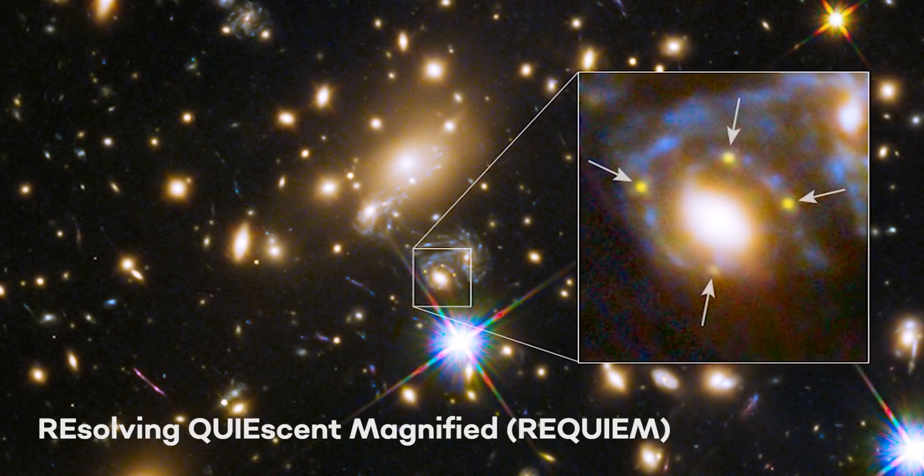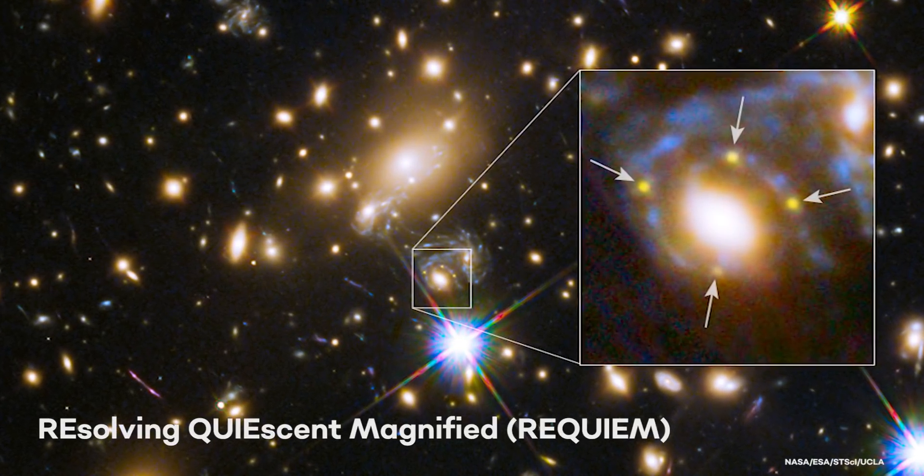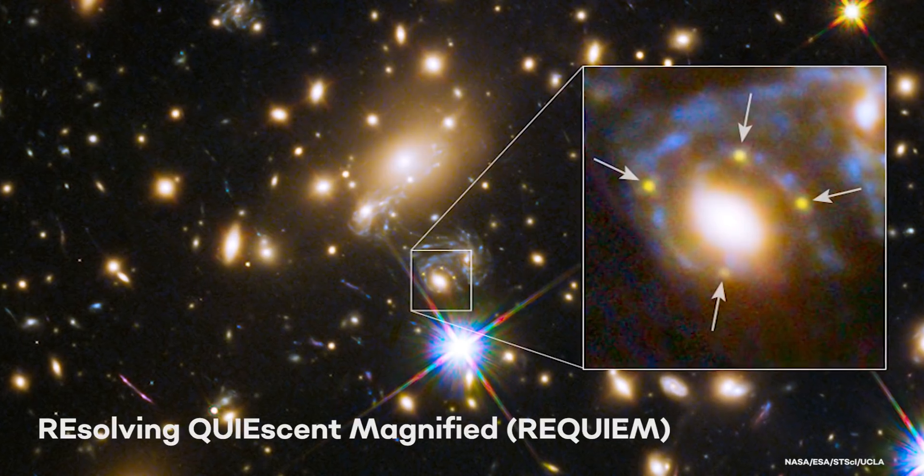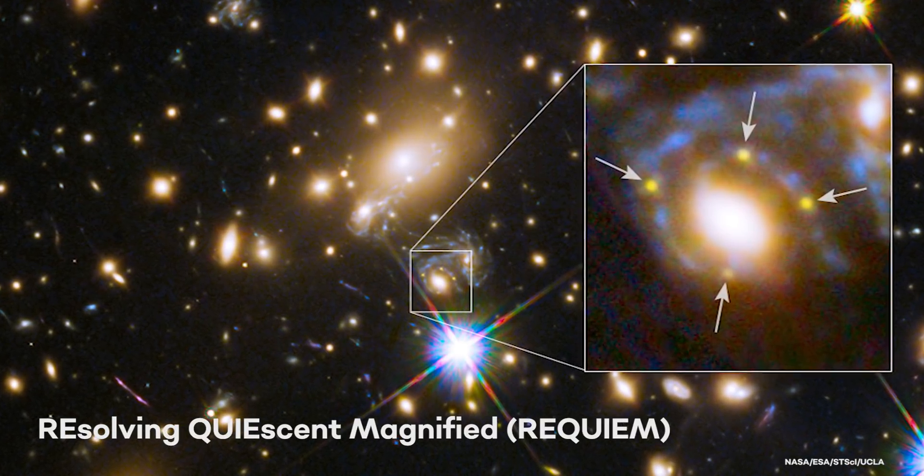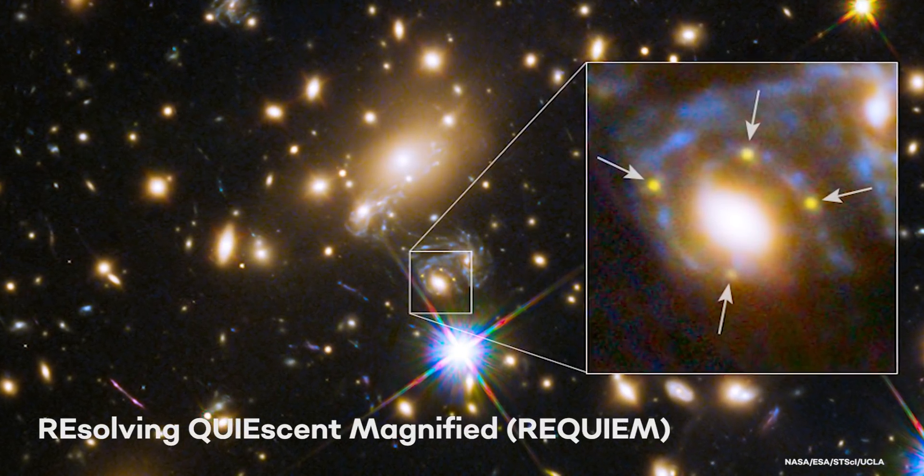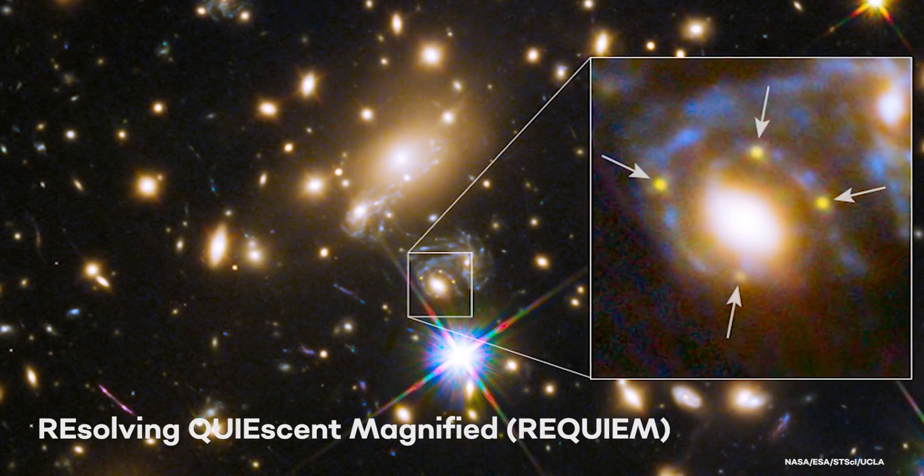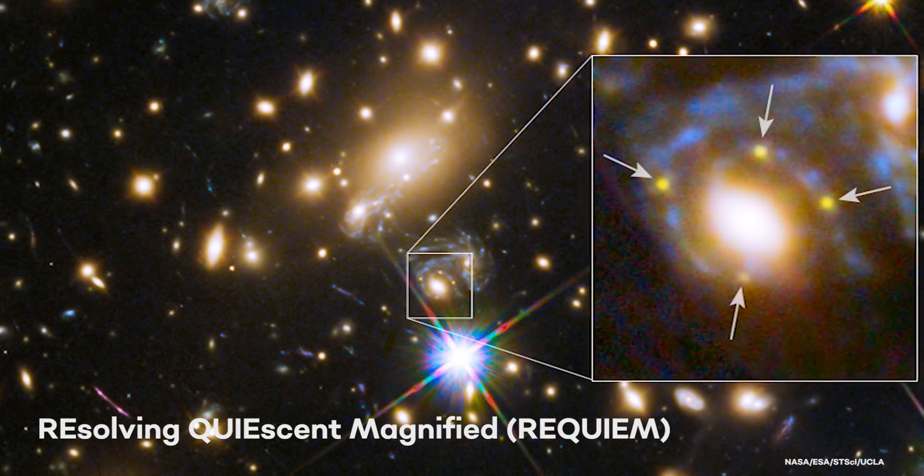The resolving, quiescent, magnified Requiem galaxy survey, combining views from Hubble in the optical and near-infrared, and ALMA in the radio, in particular, allows us to first find massive, star-forming galaxies at these early epochs, and then characterize them and their gas populations.